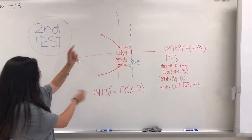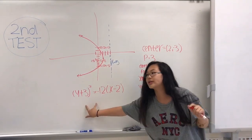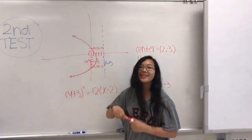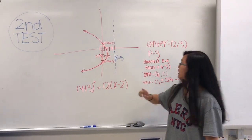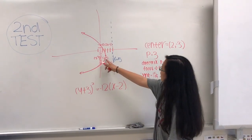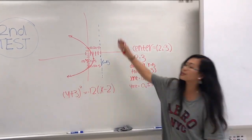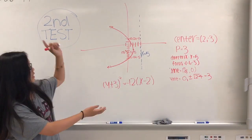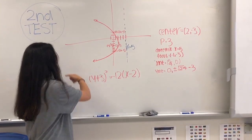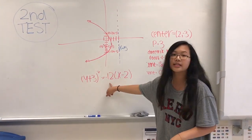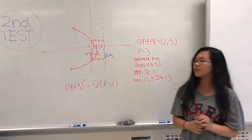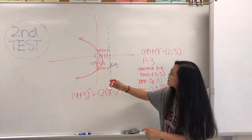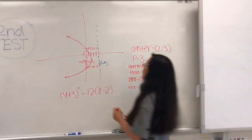This is the parabola we just solved on a graph. The vertex is at (2, negative 3) because it's the opposite of what's in the equation. The p-value is 3 — it represents the distance between the vertex and the directrix, and between the vertex and the focus. This is because negative 12 equals negative 4p, so p equals 3. The directrix is x equals 5, and the focus is at (negative 1, negative 3). The parabola opens left because y is squared and the coefficient is negative. The x-intercept is at (5/4, 0) and the y-intercepts are at 0, plus or minus the square root of (4 minus 3).